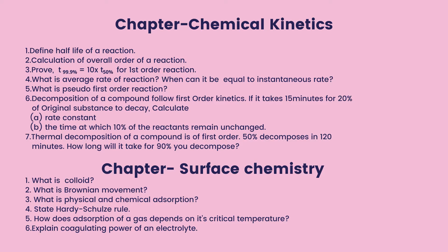Chapter: Chemical Kinetics. Define the half-life of a reaction. Calculation of the overall order of a reaction. Prove that for a first order reaction, T₉₉.₉ is equal to N into T₅₀%. What is the average rate of reaction? When can it be equal to the instantaneous rate? What is a pseudo first-order reaction? Decomposition of a compound follows first order kinetics — if it takes 15 minutes for 20% of the original substance to decay, calculate the rate constant and the time at which 10% of the reactants remain unchanged. The thermal decomposition of a compound is of first order; 50% decomposes in 120 minutes — how long will it take for 90% to decompose?